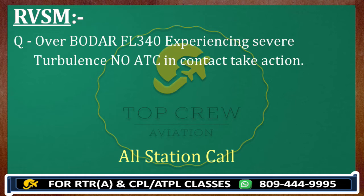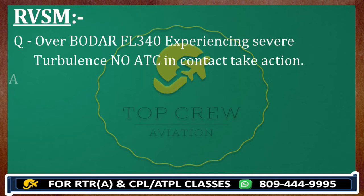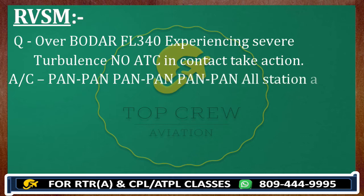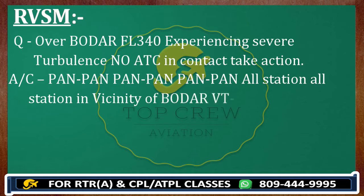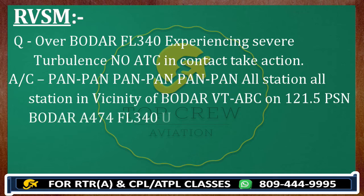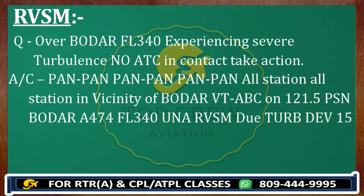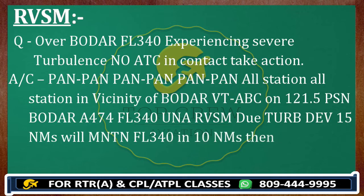Because we are experiencing two things at the same time — severe turbulence and no ATC contact. Severe turbulence refers to pan-pan thrice, and no ATC means all-station twice. So: pan-pan, pan-pan, pan-pan, all-station, all-station, in the vicinity of Bodar, Victor 10 Alpha Bravo Charlie, on 121.5. Position Bodar 0400, Alpha 474, flight level 340, unable RVSM due turbulence, deviating 1.5 nautical miles, will maintain flight level 340 for 1.0 nautical mile, then descend to flight level 280, all external lights are on, keep a lookout.